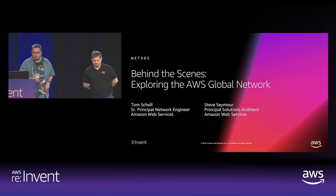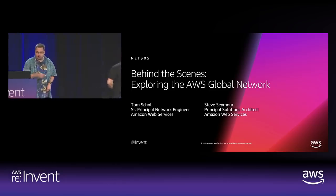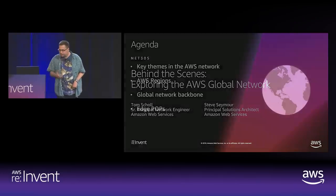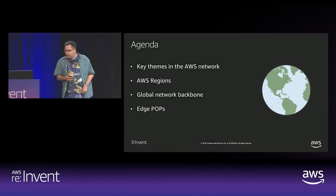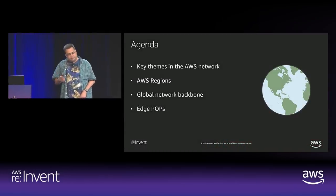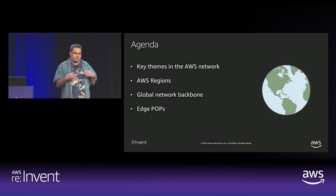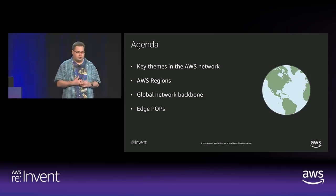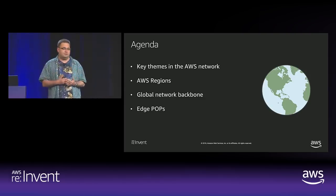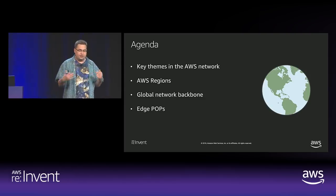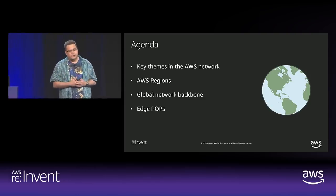My name is Tom Scholl. I'm a senior principal network engineer in the ADOS networking group. We mainly focus on a lot of our backbone connectivity as well as our network infrastructure as it relates to and from the Internet. I'm up here with Steve Seymour, who's a principal solutions architect. He works across Europe, Middle East, and Africa with our customers focusing on their network architecture and requirements when deploying into ADOS.